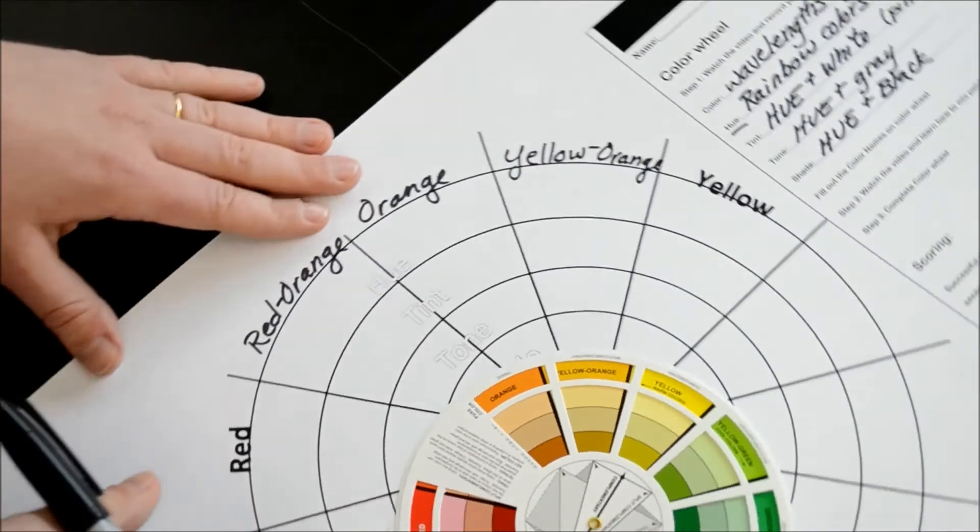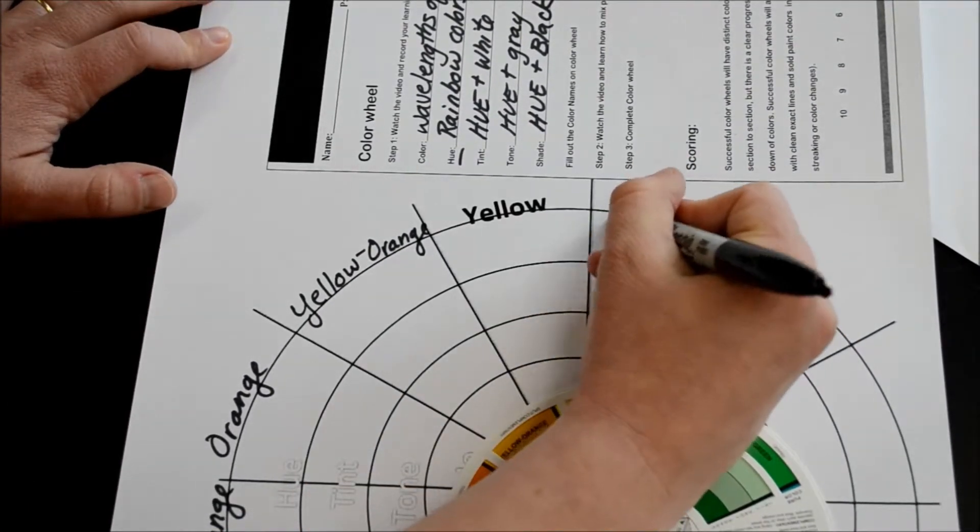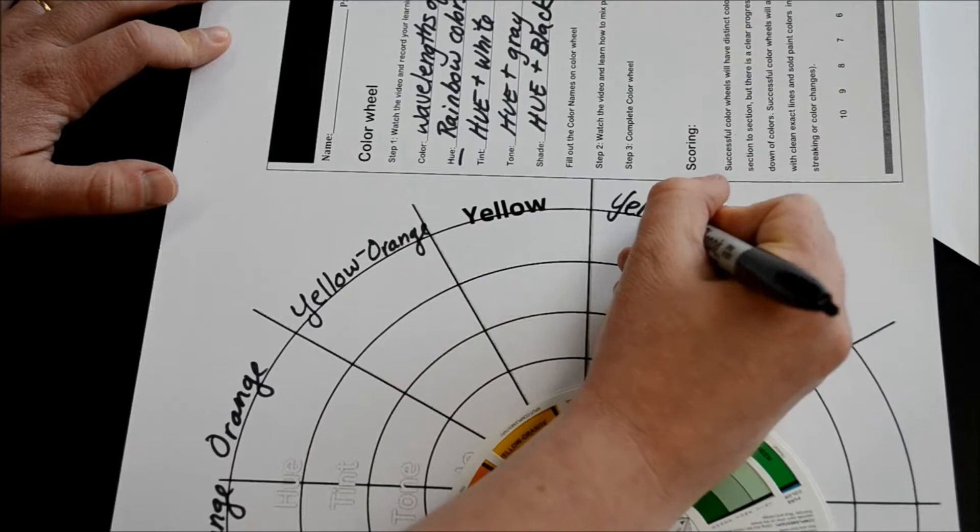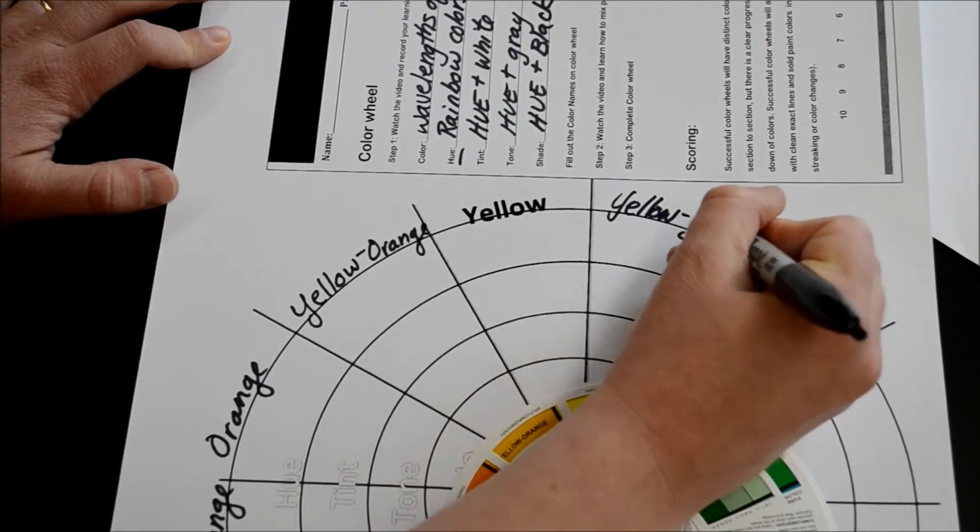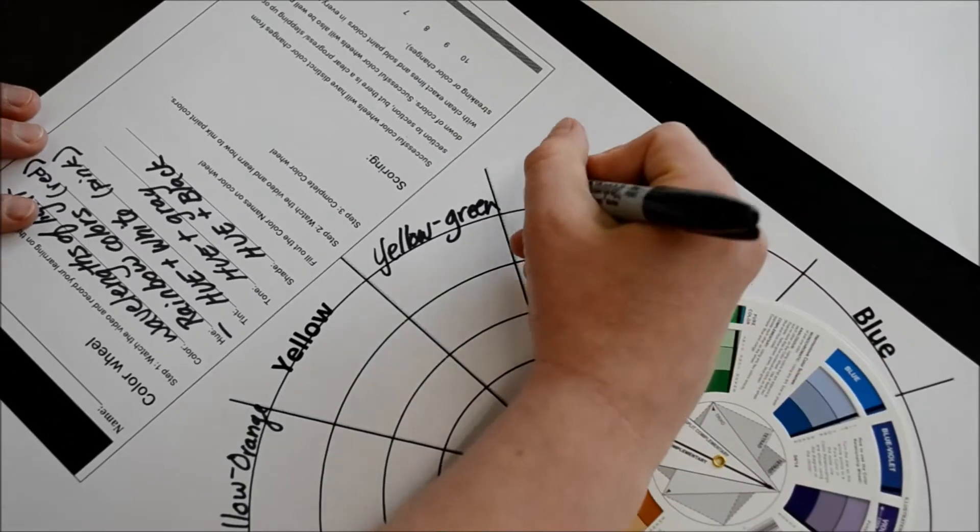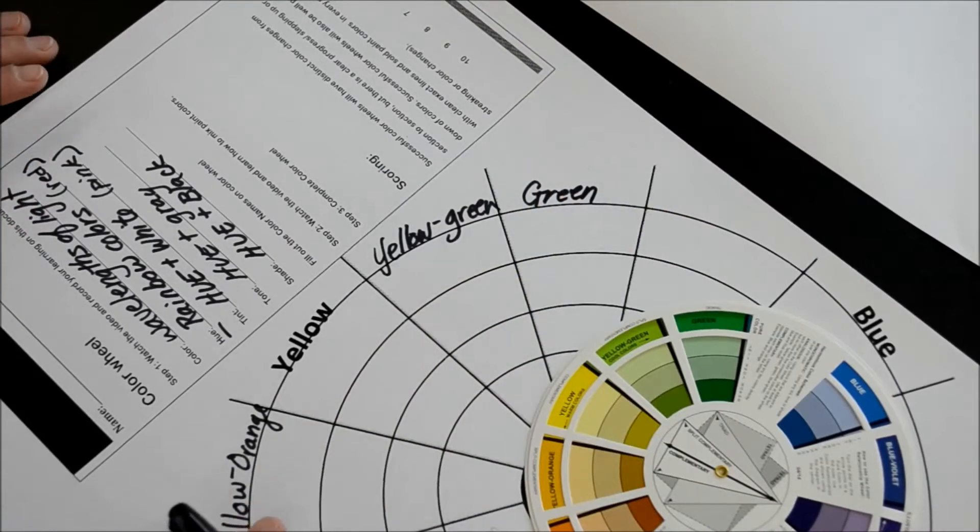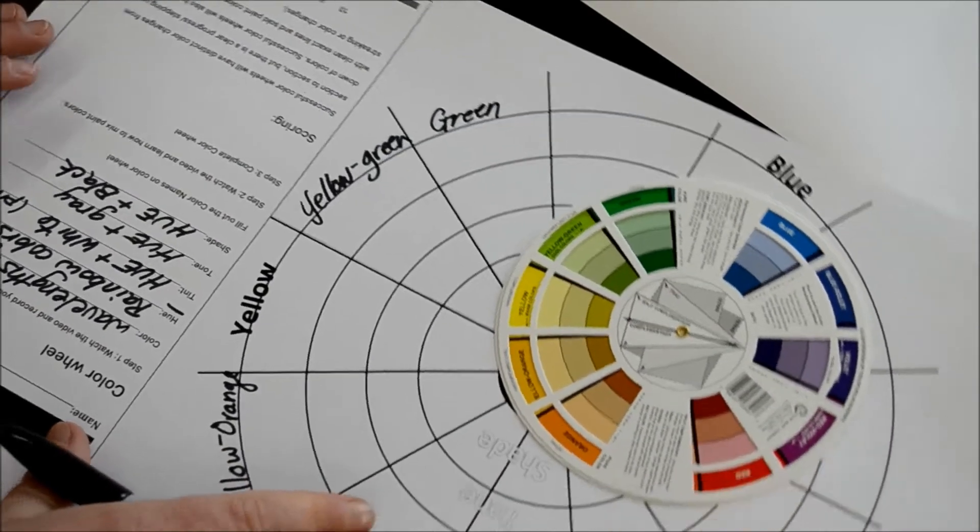Then we have a new section. Now we're at yellow. From yellow, it's always going to start with yellow, and now we're headed towards green. After yellow-green is green. Again, I'm going quite fast. You can pause the video as much as you need to catch up.